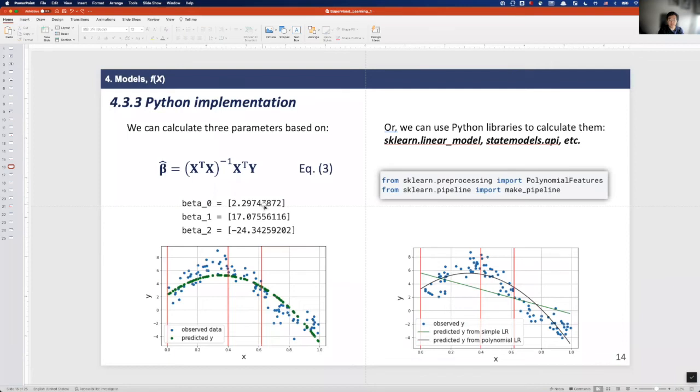With the code block I just showed you, you can make a prediction with the quadratic model we just made. The green dots here indicate the predictive values. Or similarly, we can use scikit-learn package to easily calculate these parameters and make a prediction.